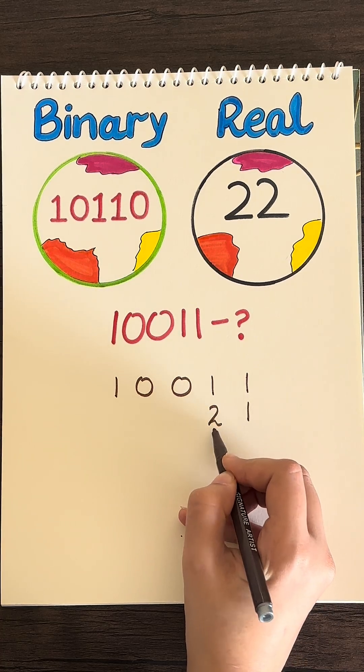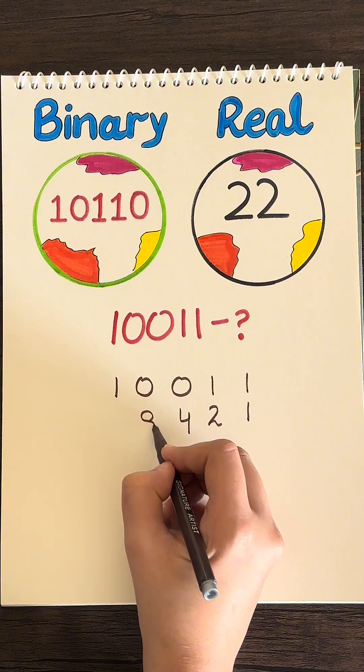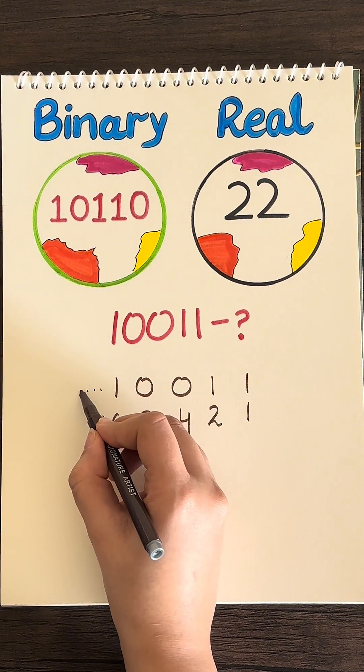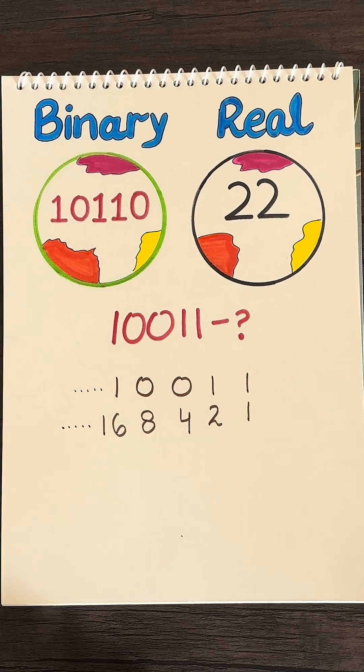So double 1, which is 2, double 2 is 4, double 4 is 8, and double 8 is 16. If you have more binary numbers, you keep on doubling until you reach the last number on the left.